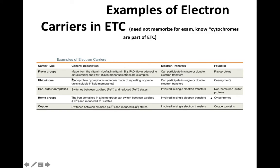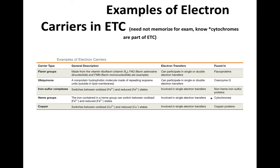Most members of the electron transport chain are proteins; some of those proteins are cytochromes. Cytochromes evolved only after porphyrin rings evolved, so cytochromes were essential for the evolution of ETCs and cellular respiration.